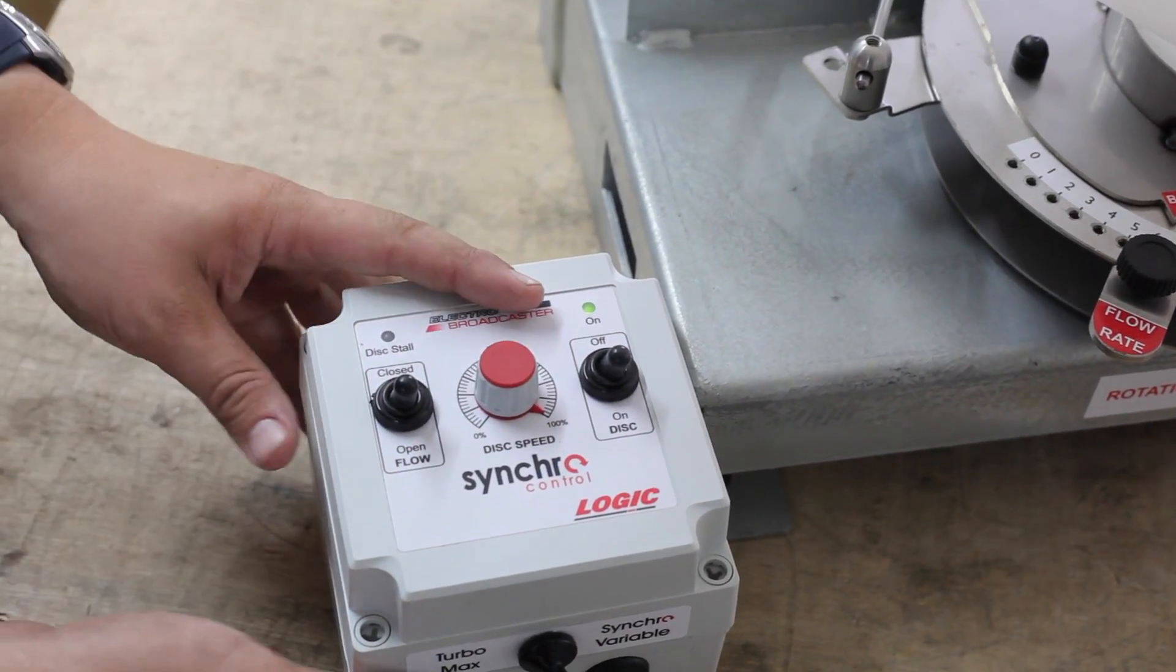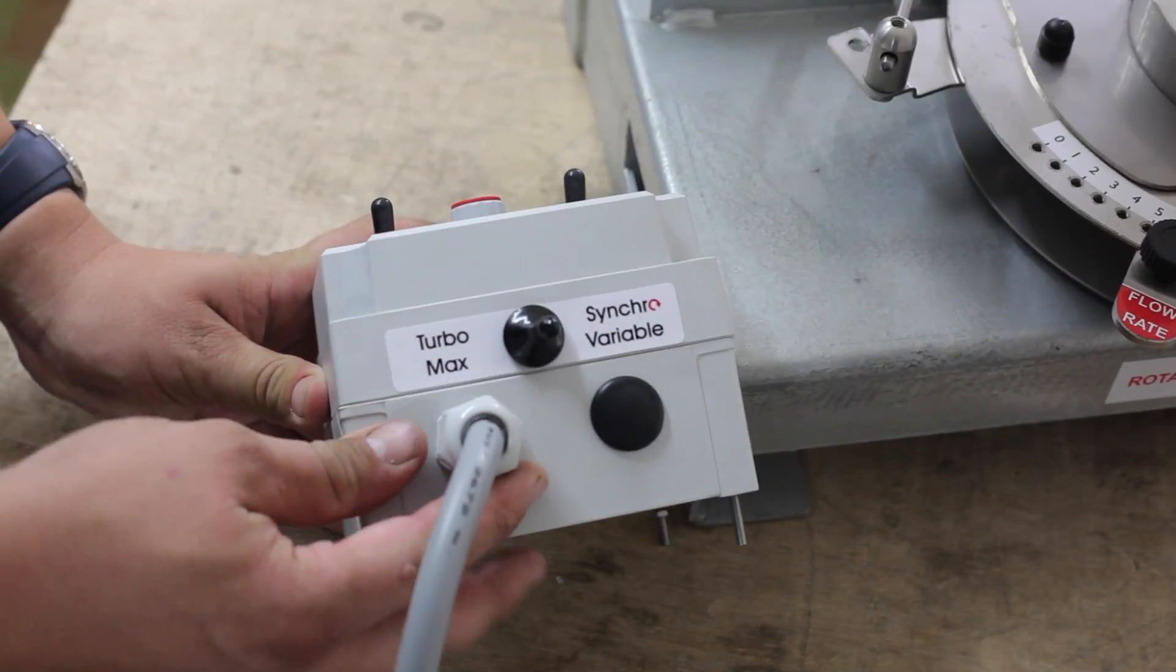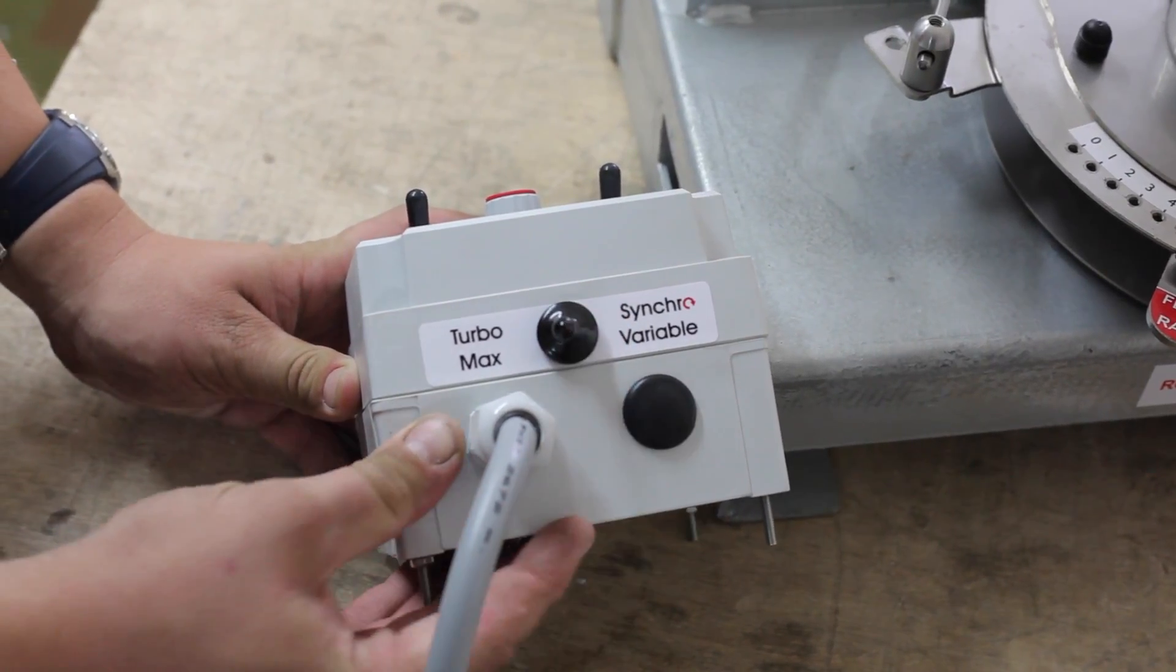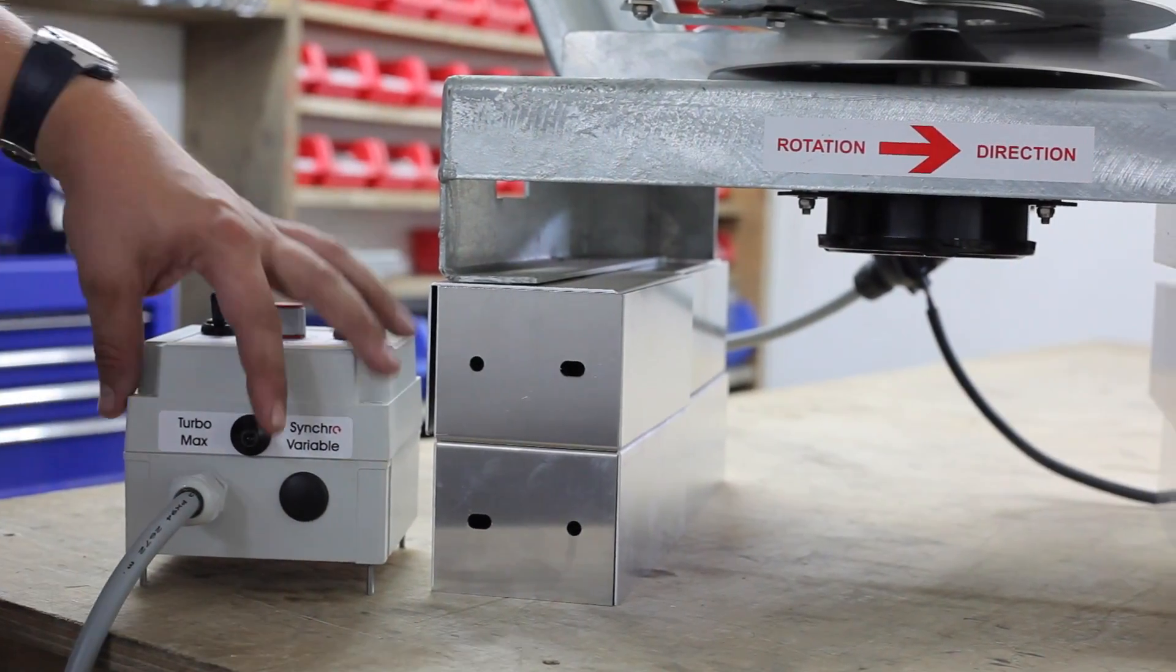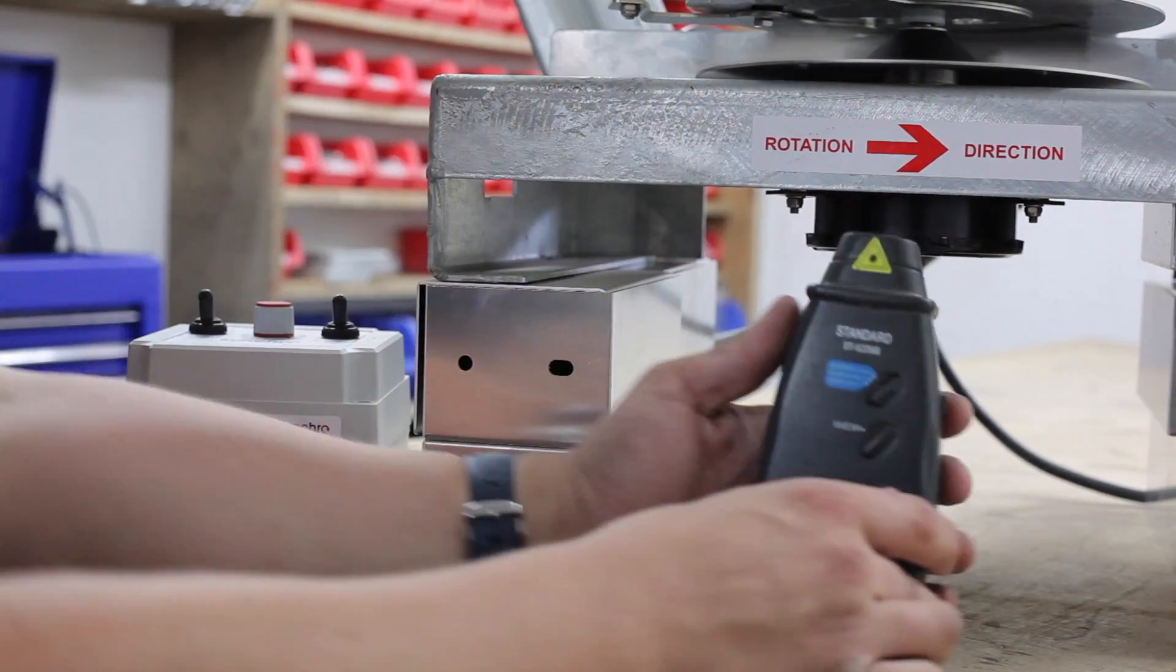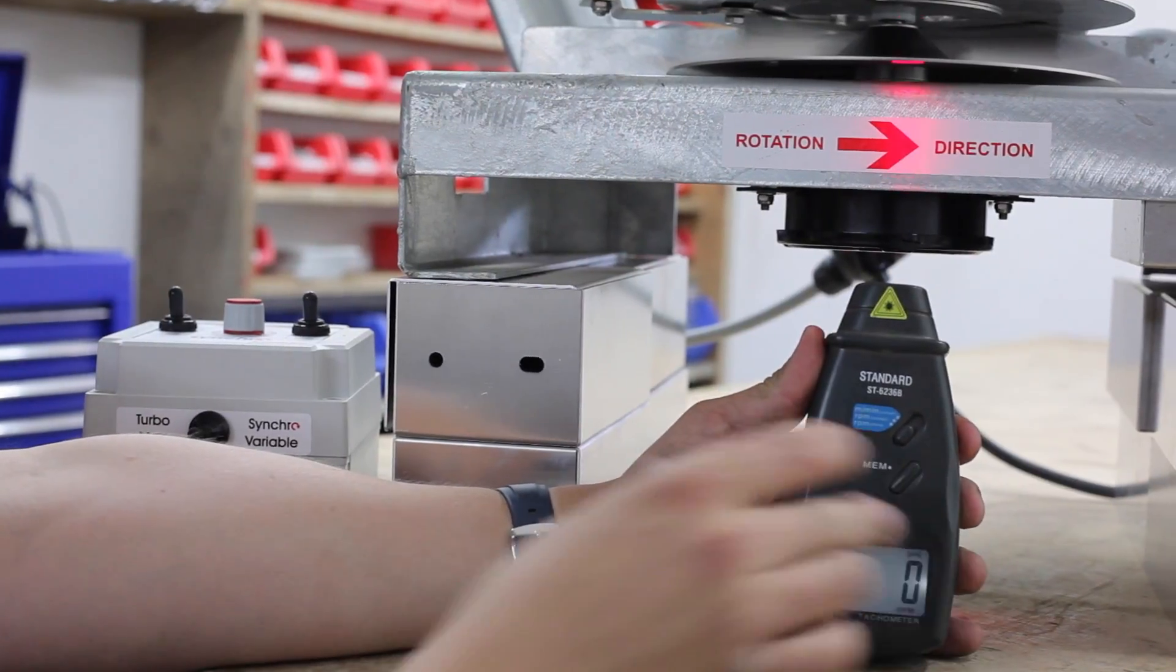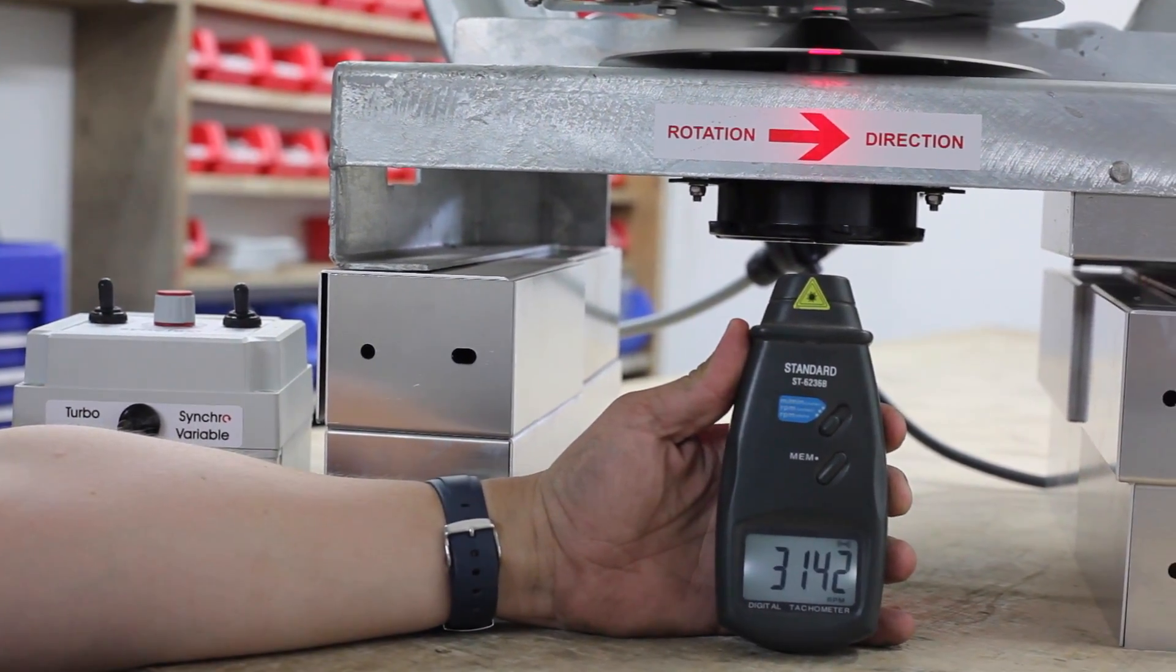There is one more feature on this model. We can switch the turbo boost, which gives the motor a further 500 RPM. Taking the maximum disc speed up to 3500 RPM, a unique feature on the Logic electro-broadcaster, to maximise spreading distance when required.